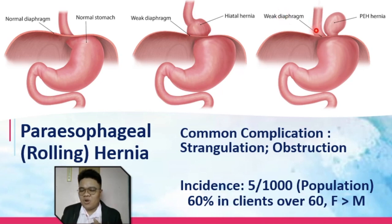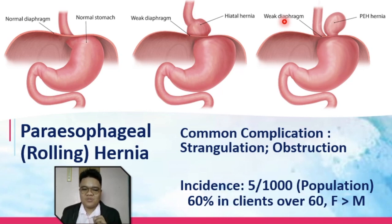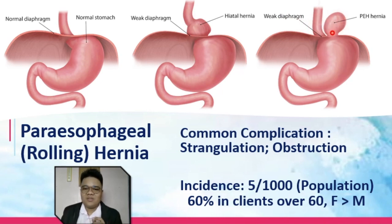If you look at it, your lower esophageal sphincter is still in place. In your rolling or paraesophageal hernia, it is the fundus of the stomach that rolled into the thorax through a weakness in the diaphragm, causing a herniation next to the esophagus. It is referred to as paraesophageal because it is beside the esophagus, and also referred to as rolling hernia.